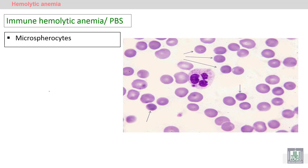For laboratory diagnosis, the screening test for immune hemolytic anemia is the presence of spherocytes — specifically microspherocytes — in the peripheral blood smear.